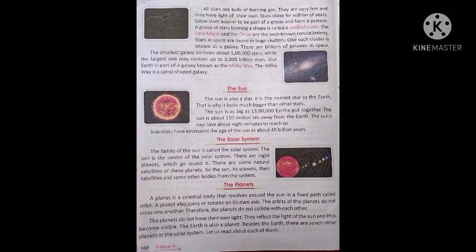The Sun: The sun is also a star — it is the nearest star to the earth. That is why it looks much bigger than other stars. The sun is as big as 13 lakh earths put together. The sun is about 150 million km away from the earth. The sun's rays take about 8 minutes to reach us. Scientists have estimated the age of the sun as about 4.5 billion years.